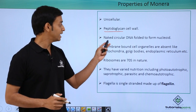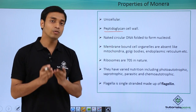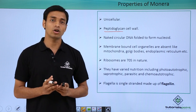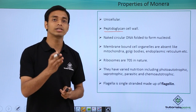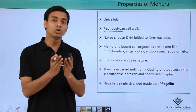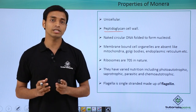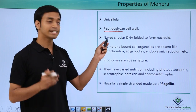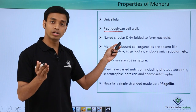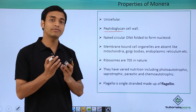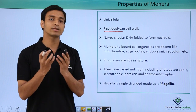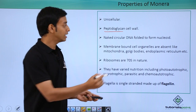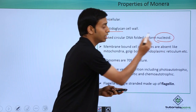Bacteria have naked circular DNA. Naked DNA means it does not have histone proteins associated with it, unlike in eukaryotes where the DNA is always associated with proteins called histone proteins. Here the DNA is naked, circular, and mostly found in a folded form. These dense folded regions of naked circular DNA found in bacteria are known as the nucleoid.